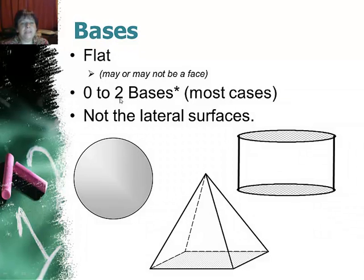Now the bases, those are not necessarily polygons. They can be curved around the edges. They must be flat. Most cases, most of the solids we'll be talking about will have zero to two bases. Usually you'll have a top and a bottom. That's what we're referring to as the base.